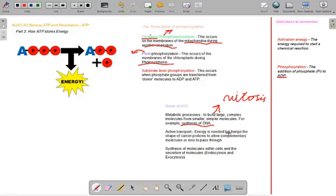Active transport, as I mentioned earlier, energy is needed to change the shape of carrier proteins to allow complementary molecules. Complementary molecules, they must be the same shape to pass through. Synthesis of molecules within cells and the secretion of the molecules by endocytosis and exocytosis. Both of these processes require energy from ATP.